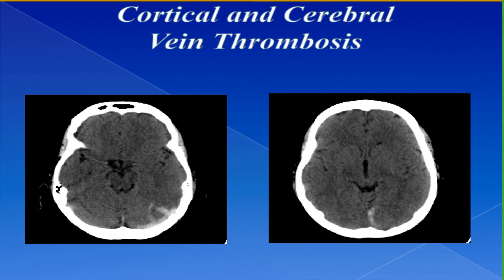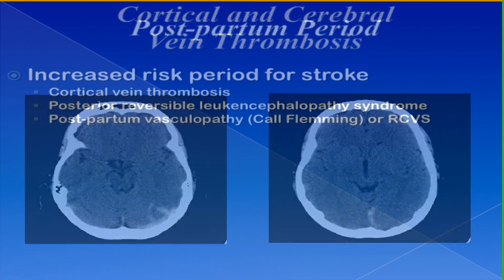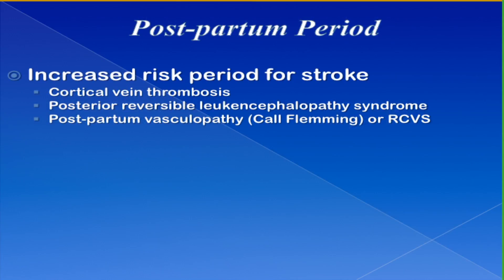Treatment for these patients with cortical vein thrombosis is obviously quite different as they require likely anticoagulation. A special risk period is always the postpartum period for stroke, and this is also true for convexity subarachnoid hemorrhages. If we see a woman who recently gave birth with a convexity subarachnoid hemorrhage, we'd be concerned about postpartum vasculopathy — previously called Call-Fleming syndrome — which is probably just a variant of reversible vasoconstrictive syndrome. The postpartum period is also a prothrombotic state, so cortical or larger cerebral vein thrombosis is a consideration, and sometimes you have to worry about PRES with the more typical posterior leukoencephalopathy changes on MR imaging.